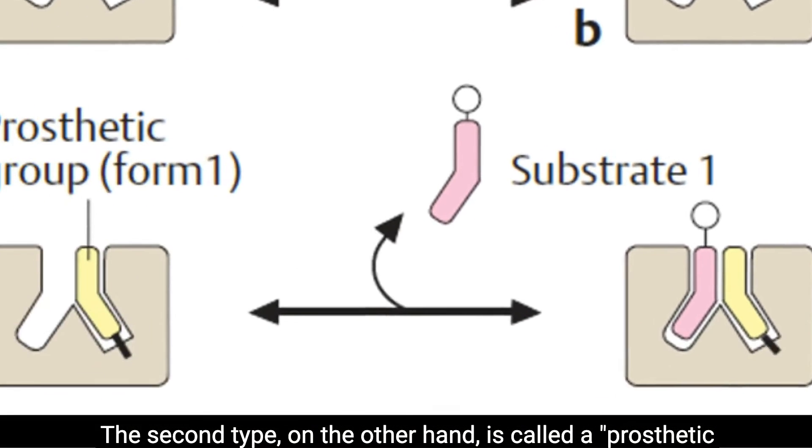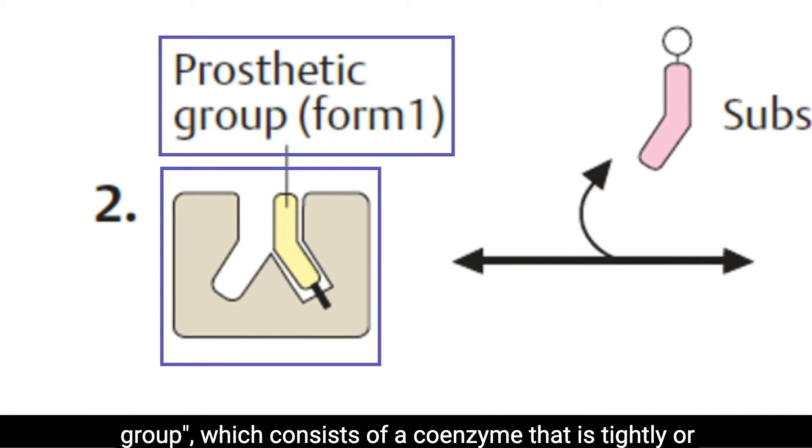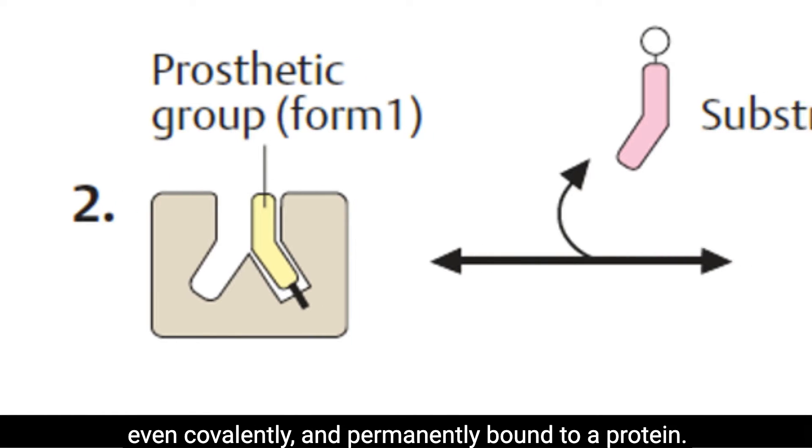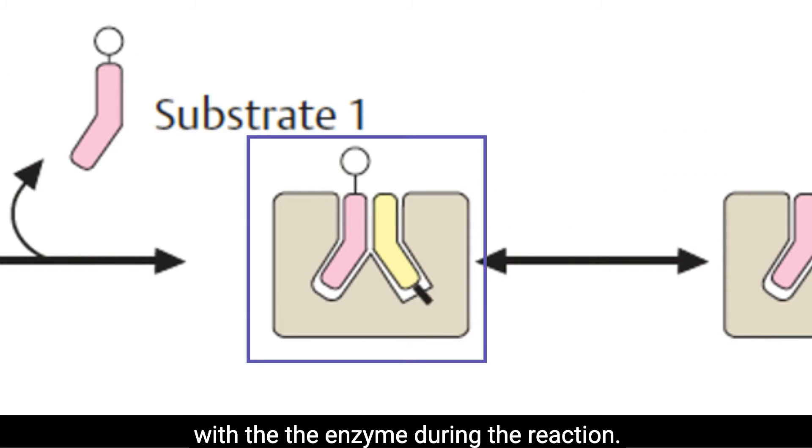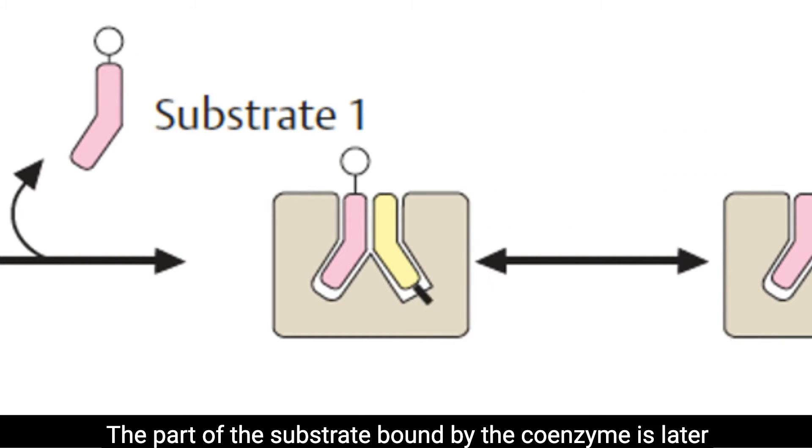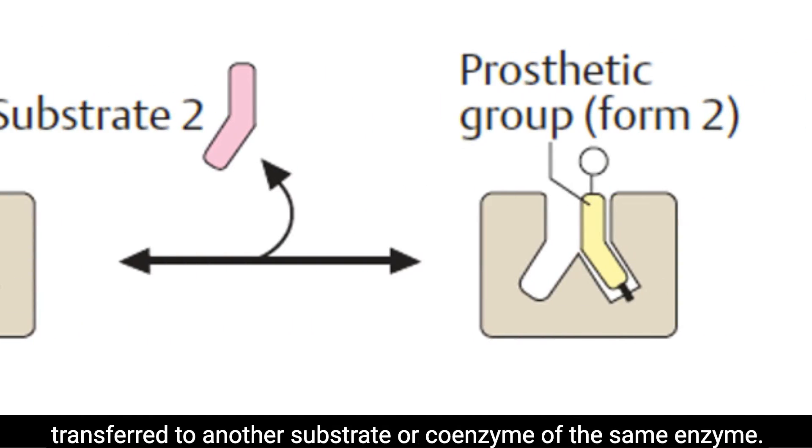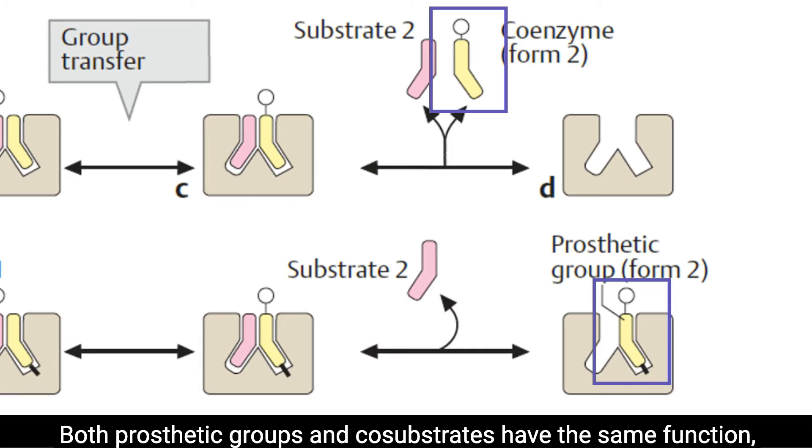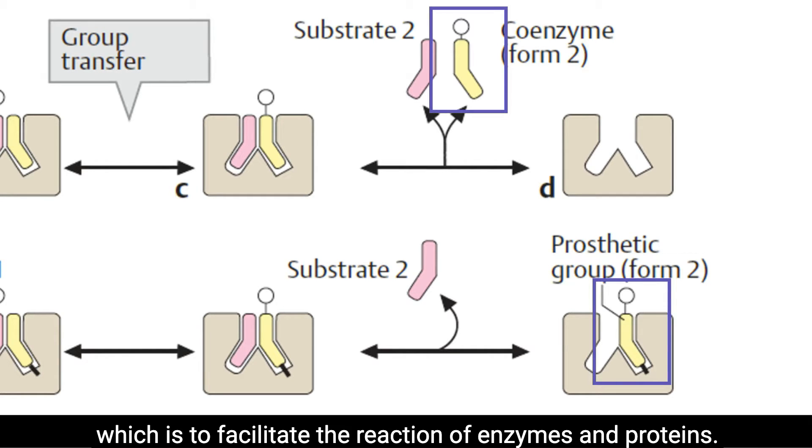The second type, on the other hand, is called a prosthetic group, which consists of a coenzyme that is tightly or even covalently and permanently bound to a protein. Prosthetic groups remain associated with the enzyme during the reaction. The part of the substrate bound by the coenzyme is later transferred to another substrate or coenzyme of the same enzyme. Both prosthetic groups and cosubstrates have the same function, which is to facilitate the reaction of enzymes and proteins.